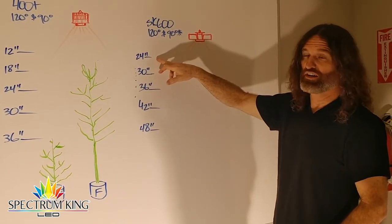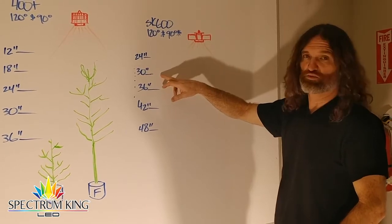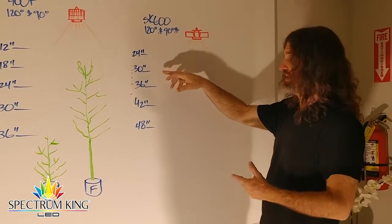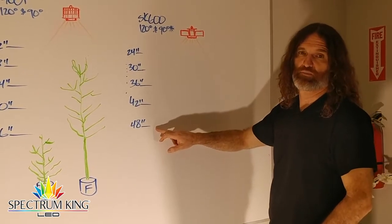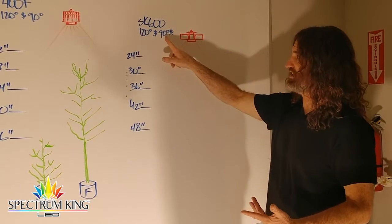The closest you want to get during flower is 24 inches. 30 is probably a safer bet, depending on the strains you're working with. In veg, you want this thing 48 inches above your plants. If you're doing greenhouse type setup, that's why I put the 90 here.